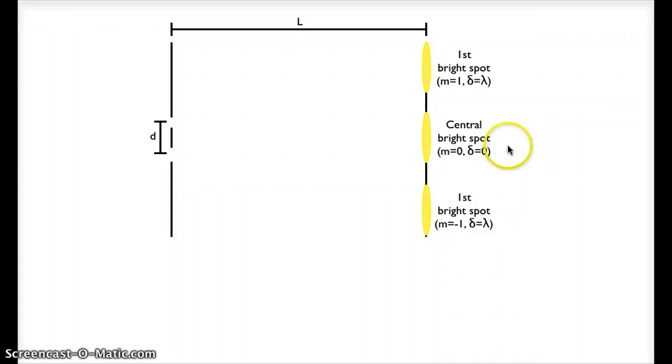We can label each of these bright spots with an m value 0, 1, negative 1 as you saw in the previous video. We can also think about the path length difference between light traveling through one slit and light traveling through the other slit as they reach that bright spot.